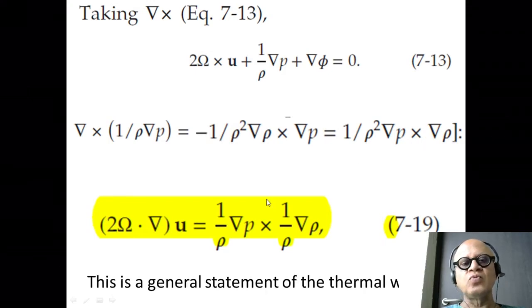So, this is the general statement of the thermal wind. Remember for constant density, we just ended up with geostrophic flow not varying in the Z direction, which in this case is the direction of rotation.